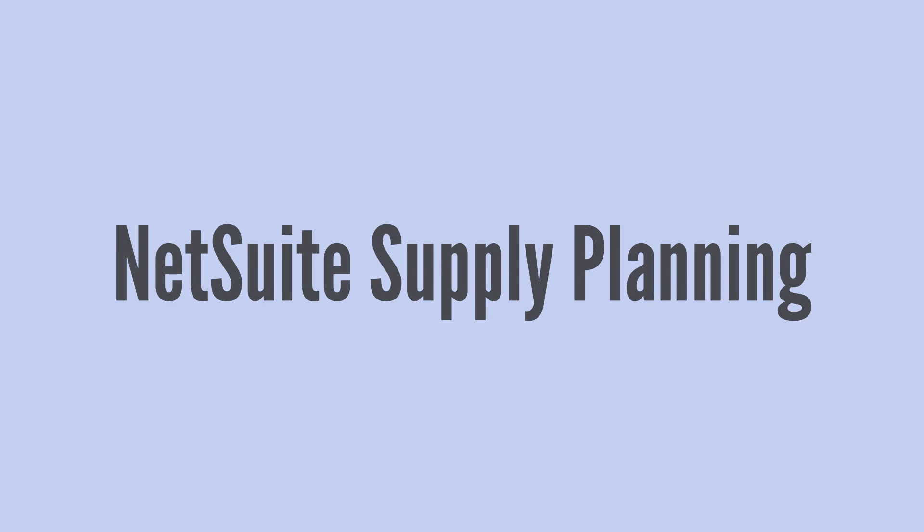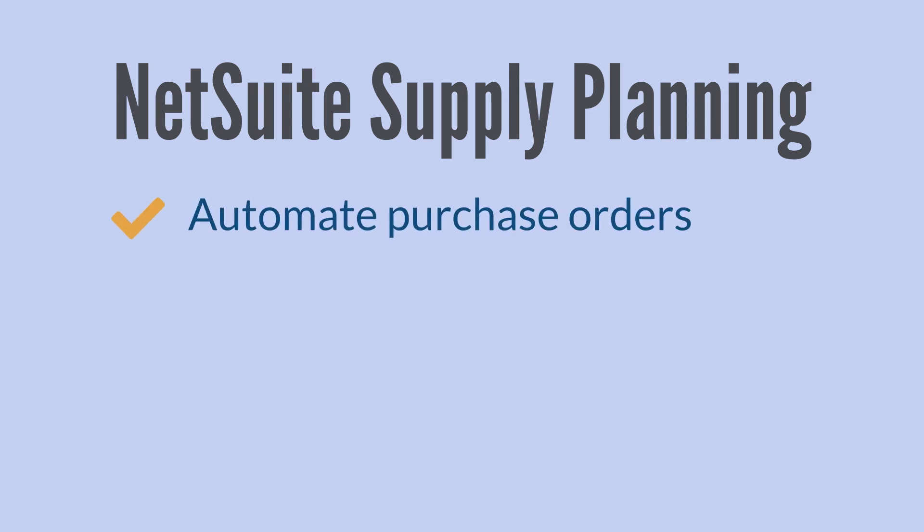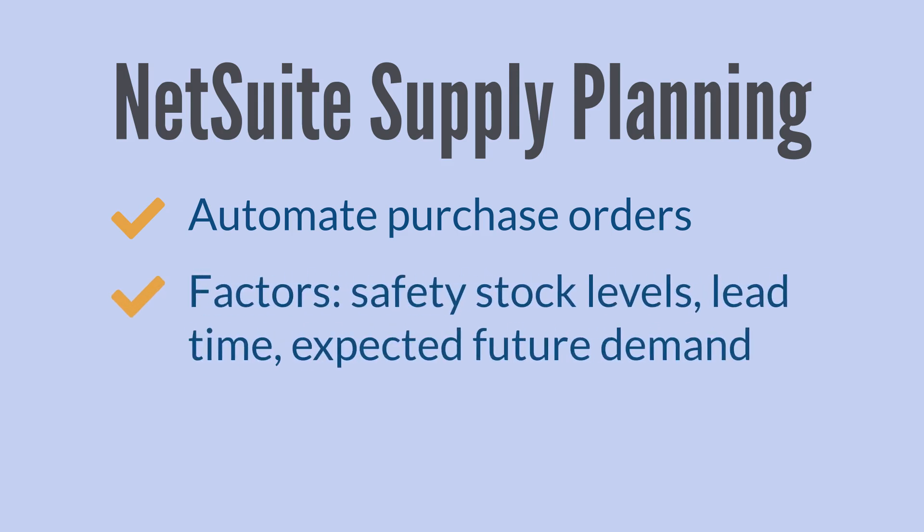Let's take a look at NetSuite's supply planning. While the demand plan provides helpful information, supply plans enable you to act on that information without wasting time manually creating purchase orders. With a good supply plan in place for your items, NetSuite will create the necessary purchase orders for you, and all you have to do is review and edit them. NetSuite takes several factors into account, including the safety stock level for the items, their lead time, and the expected future demand, ensuring that items will arrive in your warehouse right when you need them.